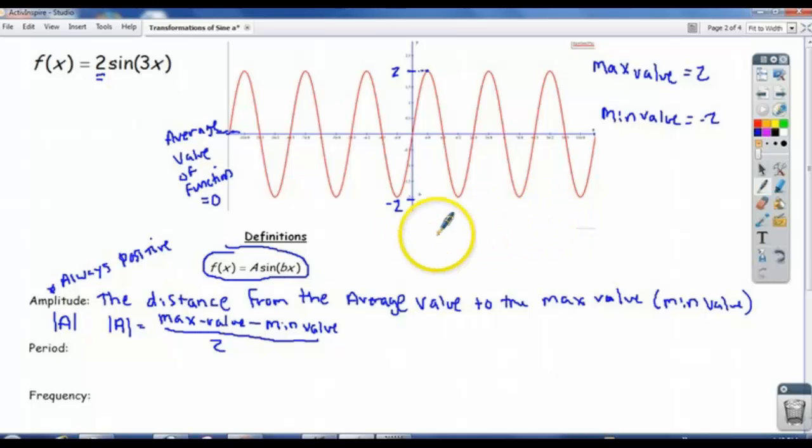One way to compute it is to take your max value, subtract your minimum value, and then divide by 2. So that works in our case. The max value is 2, minus the minimum value which is negative 2, and then divide by 2. You get 4 over 2, which equals 2, which is also the absolute value of A.